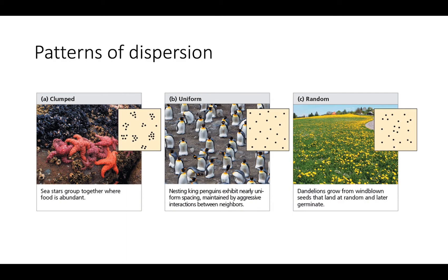You also see uniform dispersion with trees or plants that secrete chemicals into the soil around them to prevent other members of the same species from growing too closely. These are situations in which you would see a uniform distribution.